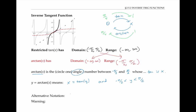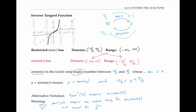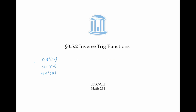The inverse tan function can also be written as tan to the minus one of x. Tan inverse of x means the inverse trig function arc tan of x, and it's not equal to one over tan of x, which is called cotangent of x. And that's all for this video on the three basic inverse trig functions: sine inverse x, also known as arc sine of x; cosine inverse x, also known as arc cosine of x; and tan inverse x, also known as arc tan of x.